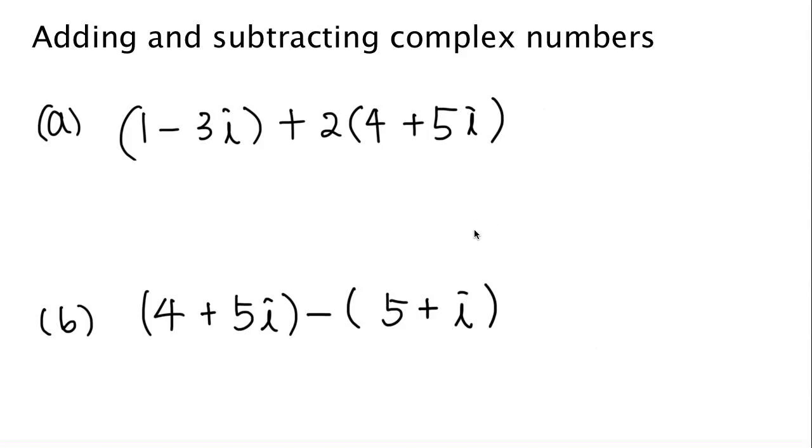Computing complex numbers is just like simplifying polynomials. i is a number, i is the square root of negative 1, but we can just treat it like a variable.